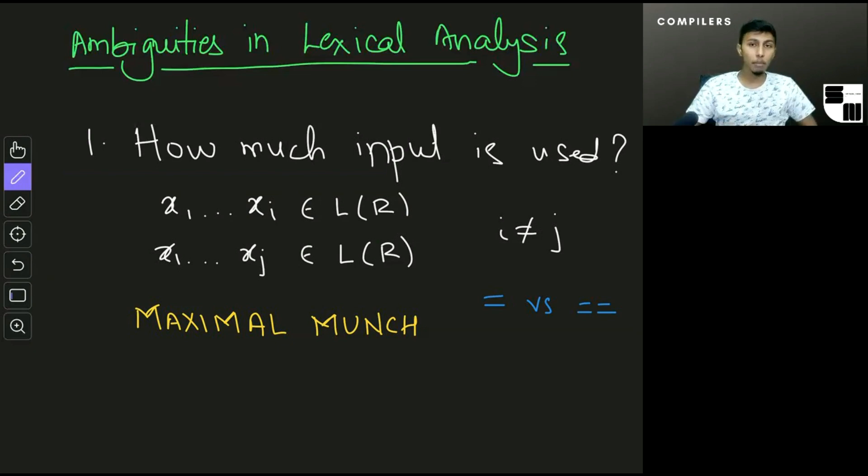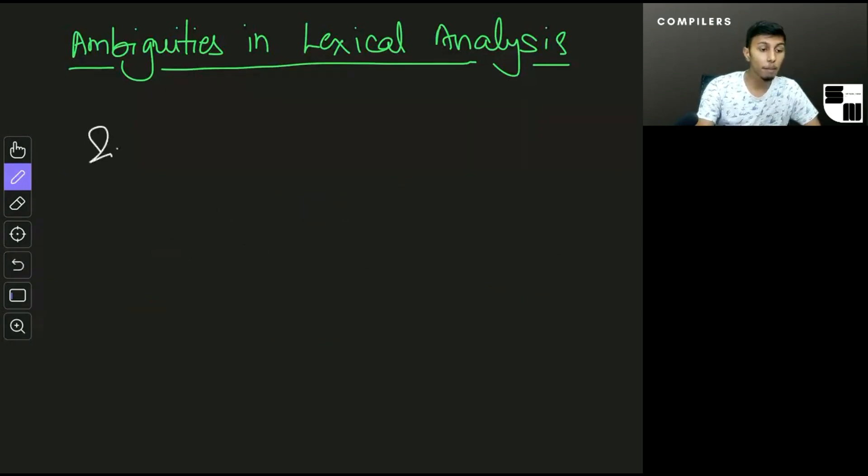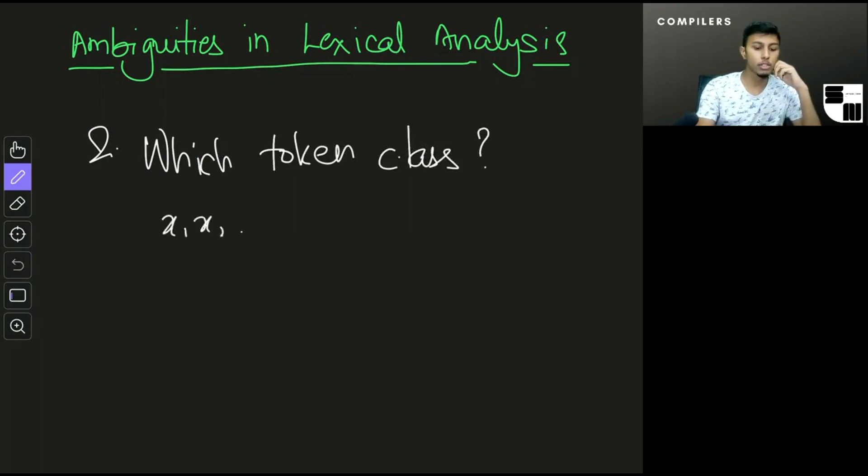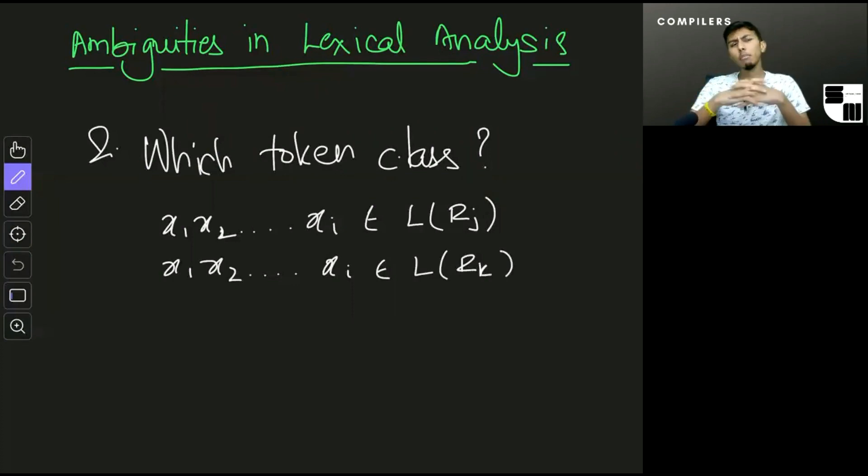So that is how this ambiguity is solved. There's another ambiguity about which token class to use. What this means is: what if x1 x2 through xi belongs to L of Rj, but x1 x2 through xi also belongs to L of Rk? There are some interesting scenarios where this would come up.